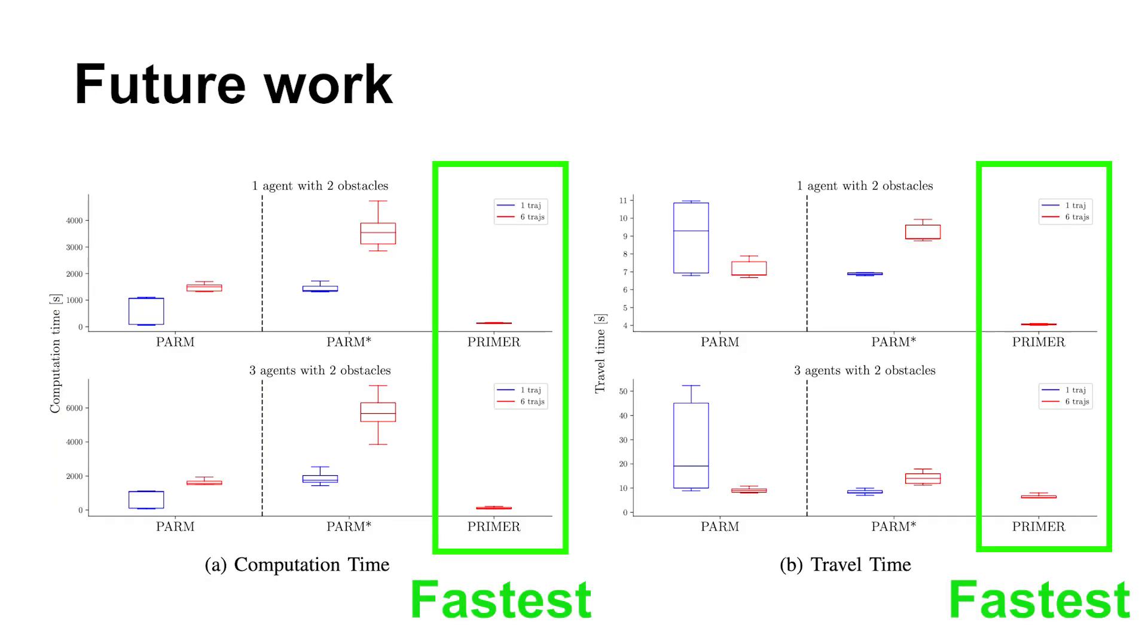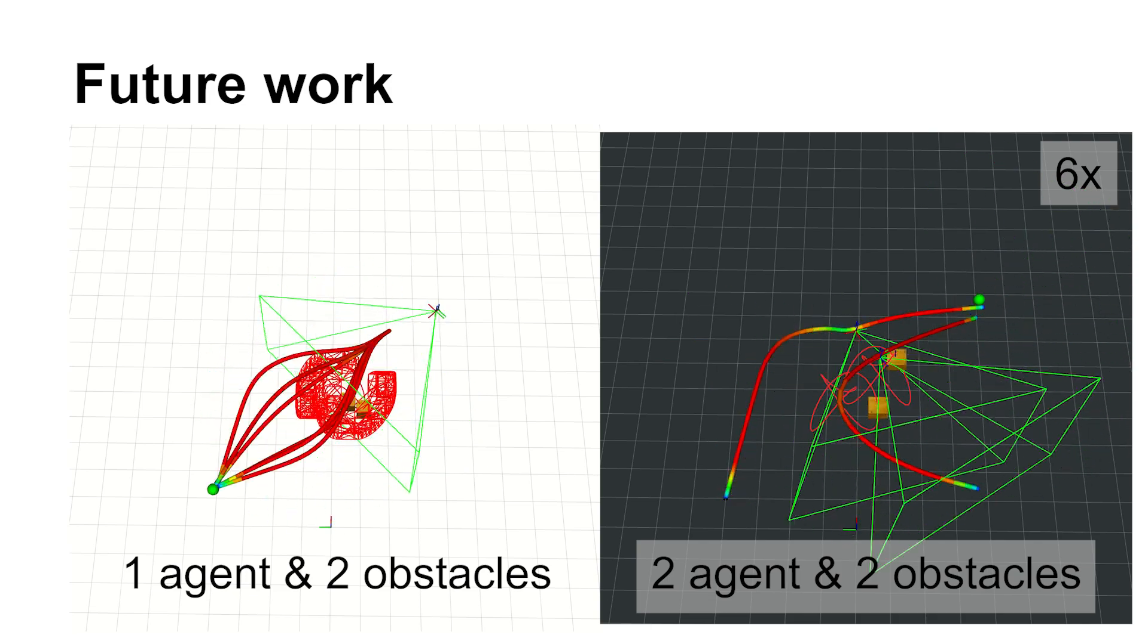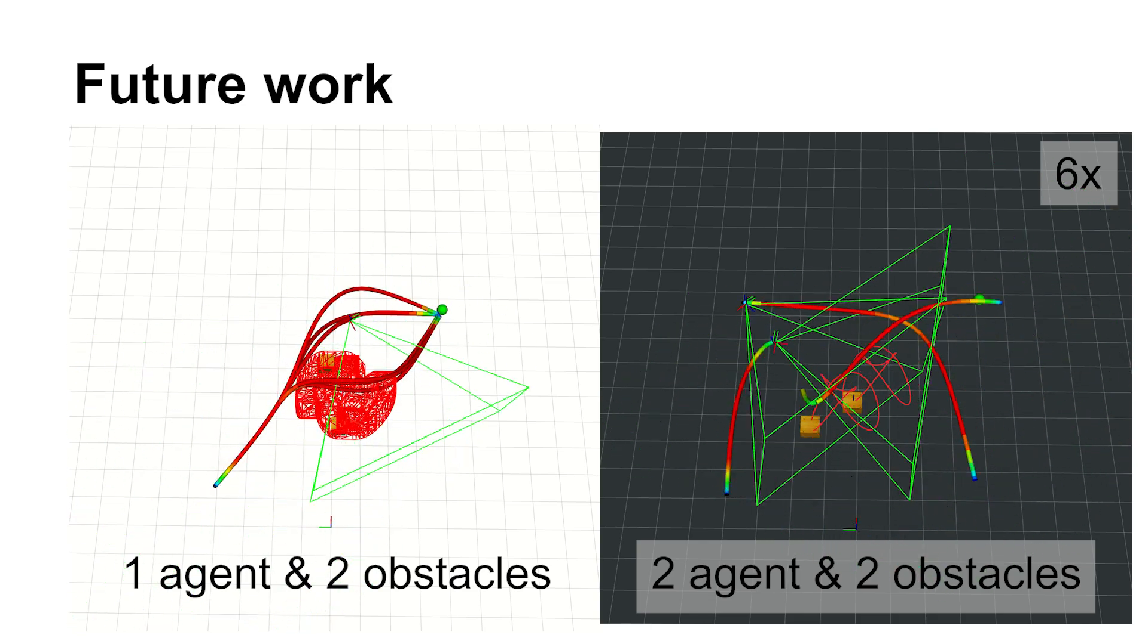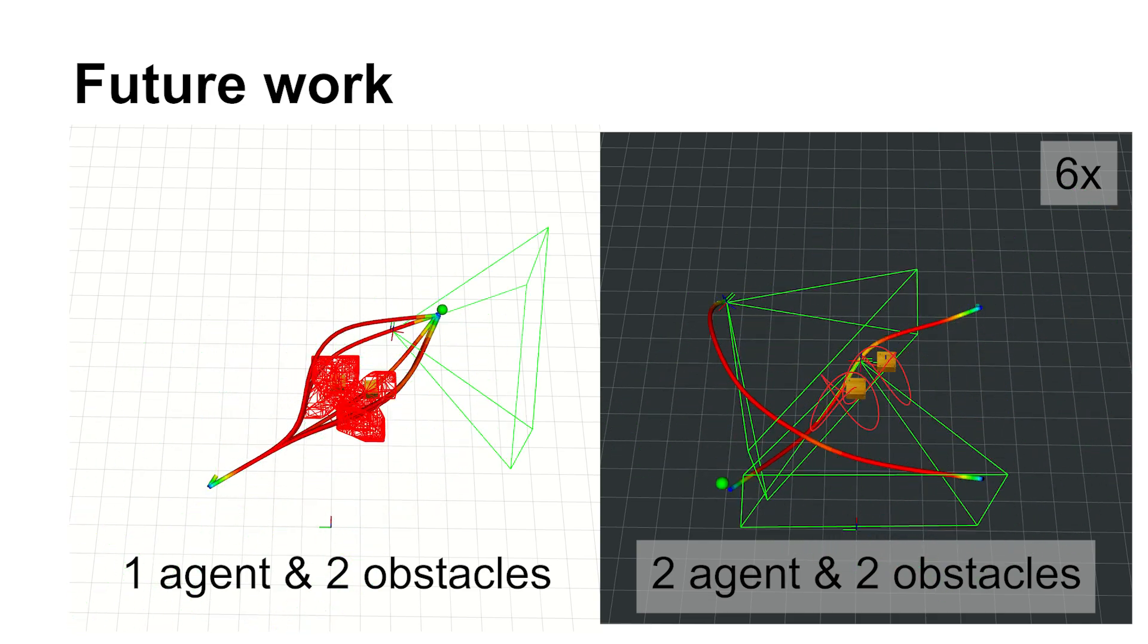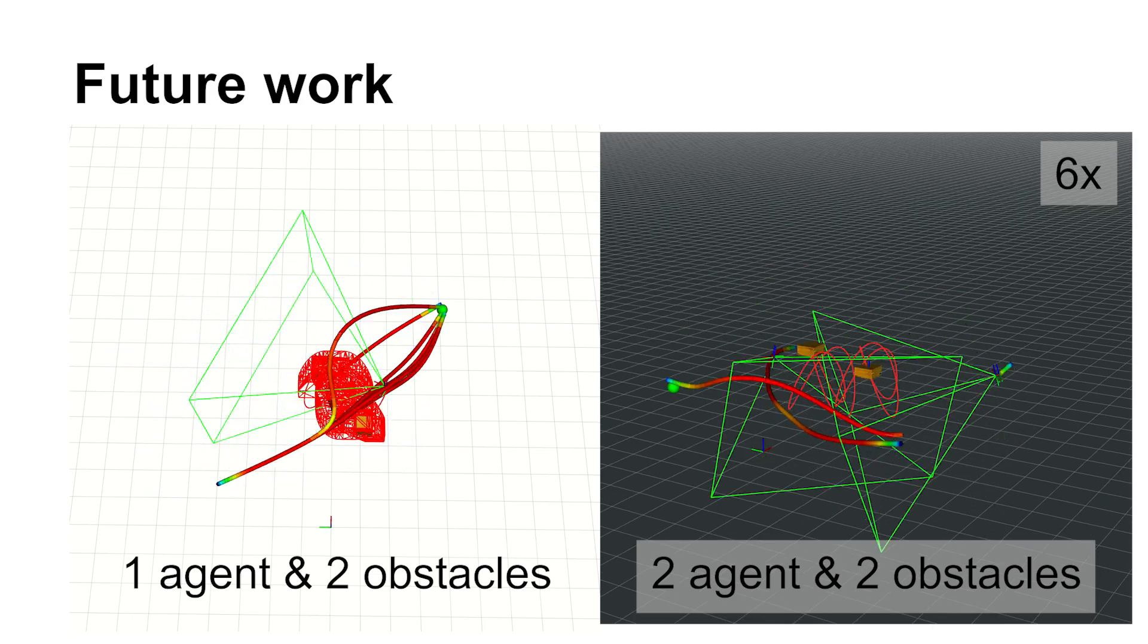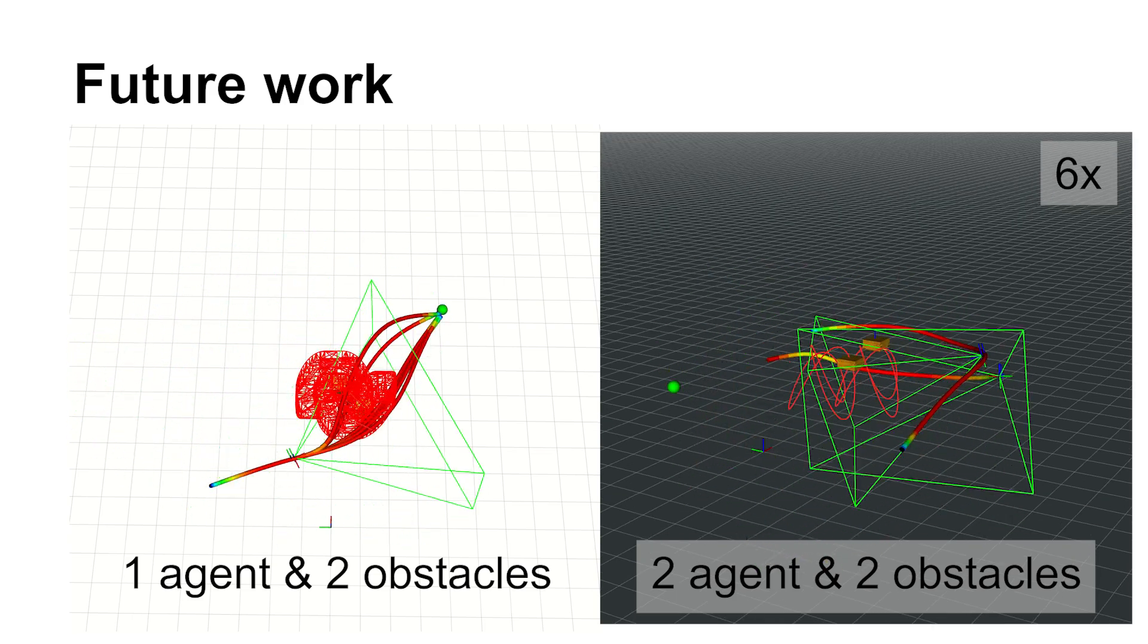Here are the multi-agent and multiple-obstacle scenarios. In both cases, Primer achieves the fastest computation time and shortest travel time. You can see Primer avoiding multiple obstacles while tracking them, as shown by the green pyramids representing the agent's field of view. The trajectory is color-coded, with red indicating higher speeds.